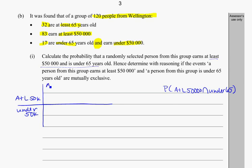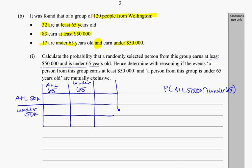In the next categories, I've got the fact that they're at least 65 years old, and if they're not at least 65 years old, they must be under 65. I can break that off here, and I've got this other information which will help me figure out the totals — that it's 120 people from Wellington. I know 32 of them are at least 65 years old, so everybody in that column adds up to 32.